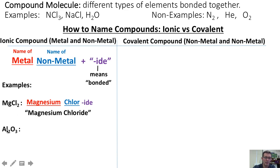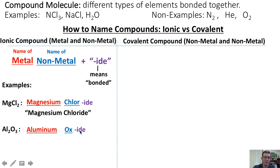Likewise, if they wanted to name Al₂O₃, they'd take the name of the metal, aluminum, followed by the name of the nonmetal, oxygen, and then add the suffix "-ide" to show that the aluminum and the oxygen atoms have been bonded together. So the name of this molecule would be aluminum oxide.